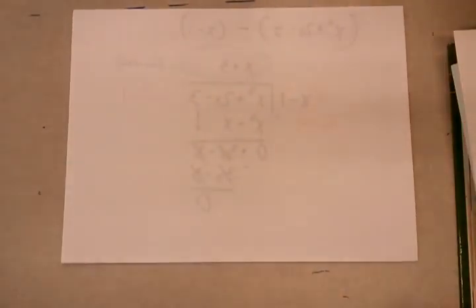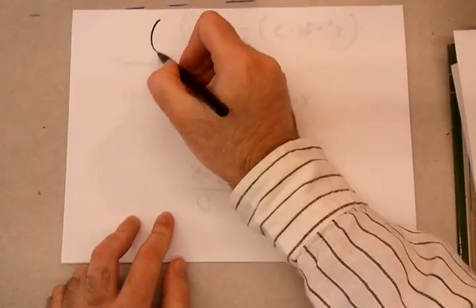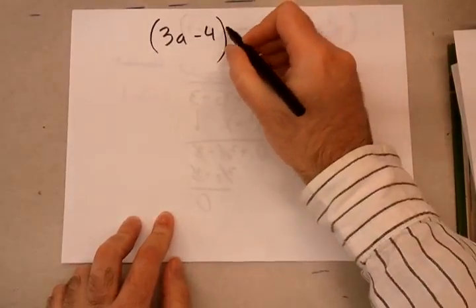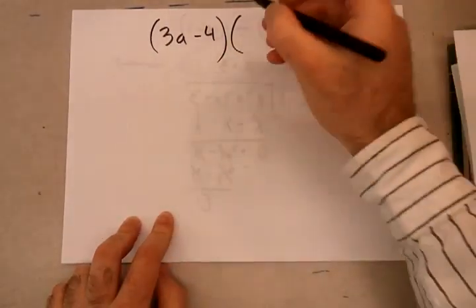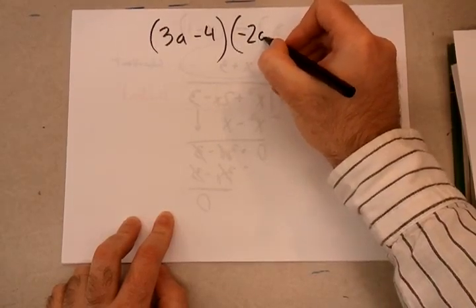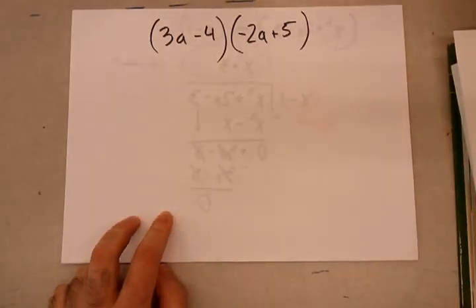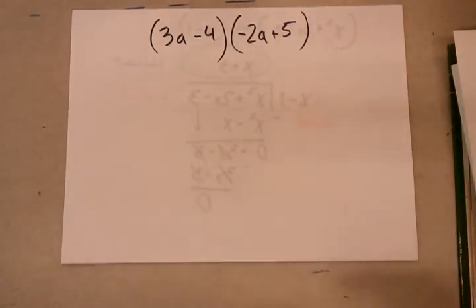So for example, I'm going to choose two random out of thin air binomials. I'm going to go with 3a minus 4 times negative 2a plus 5. Totally random. The only thing that has to be consistent is the variable has to be the same. You can't do different variables. You can, but don't. So now what I do? I foil it. Pretty easy. We know how to foil.